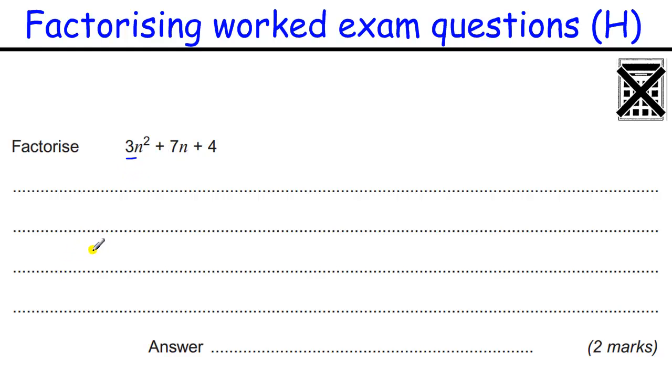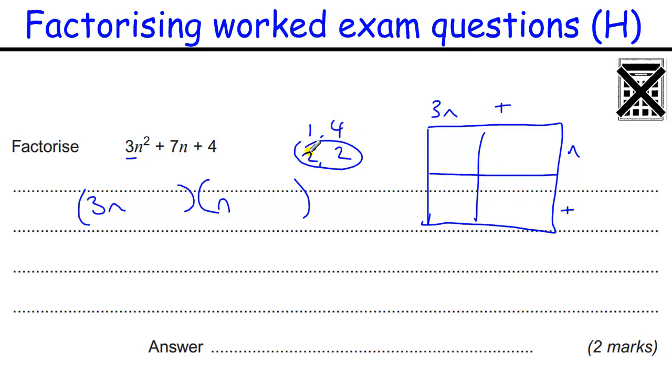OK. A little bit trickier with the number in front of the n squared. So now we can't use n and n. Because it's a prime number. It's 3. There is only one way of multiplying these two things to get 3n squared. And that is 3n times n. And then we've got to think of combinations that multiply to give us 4. So 1 and 4 and 2 and 2. Now with this sort of thing it probably would help to draw yourself a little grid. And to think about all the possible combinations that work for this. And until you get experience in this this is quite tricky to do just by looking at it.